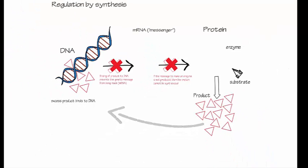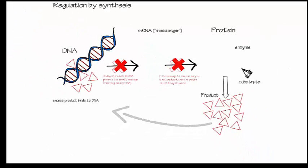For the cell to resume making more enzyme, the product must not be in excess. When the product is used so that it is no longer in excess, then there is not enough product molecules to bind the DNA, and the process of synthesizing the enzyme is restored.